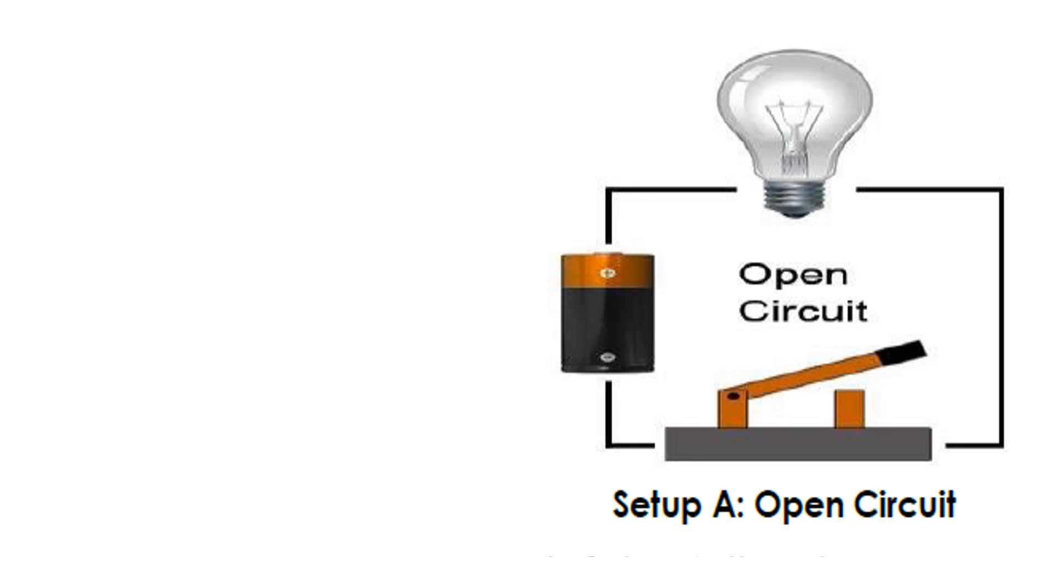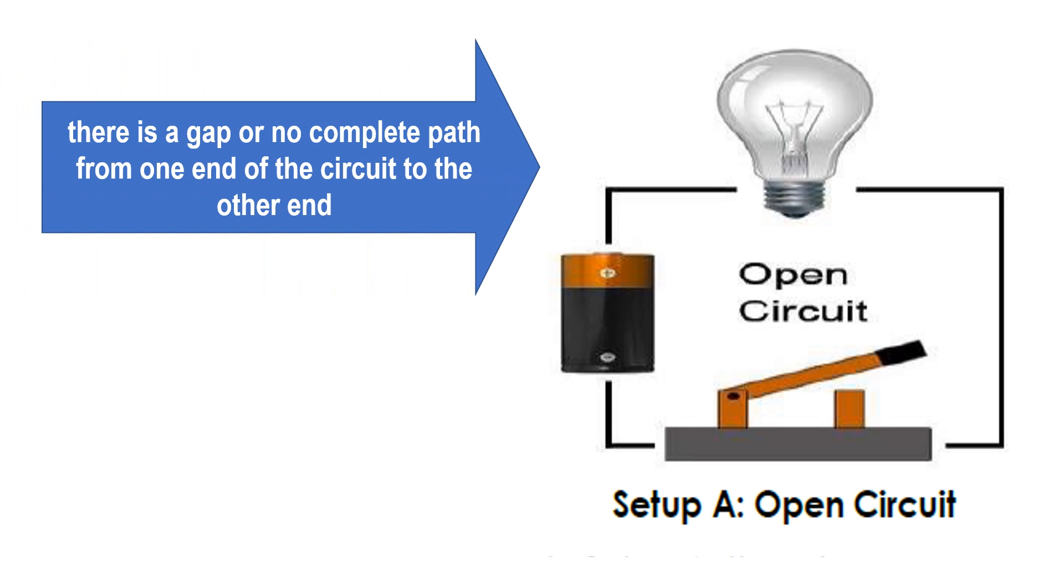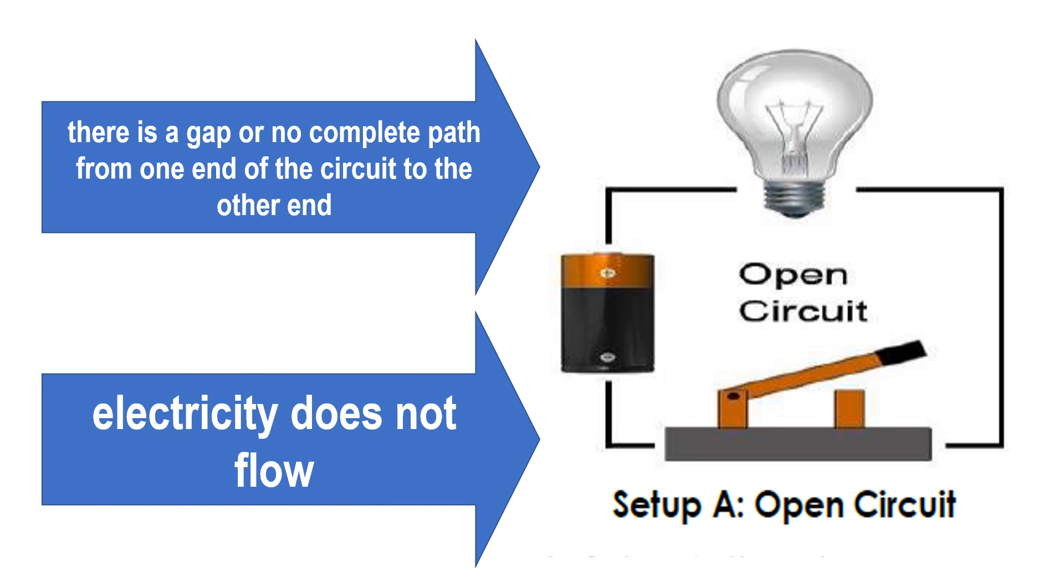Look at the picture carefully. This is a setup of an open circuit. As you can see, there is a gap or no complete path from one end of the circuit to the other end. For this reason, electricity does not flow.